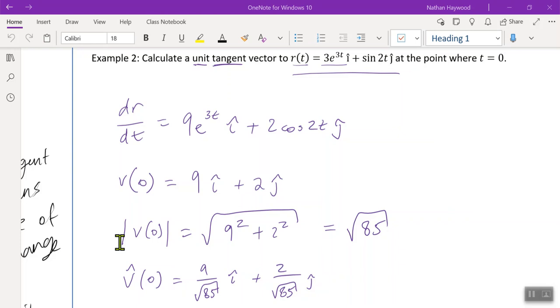Last lesson we did derivatives, and do you remember this question? So we found the unit tangent vector, so we found the derivative, the rate of change or the gradient and subbed in t equals zero.